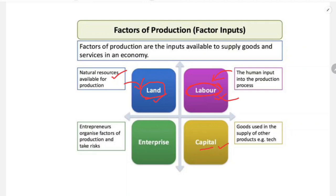The third factor of production is capital — goods used in the production of other goods.